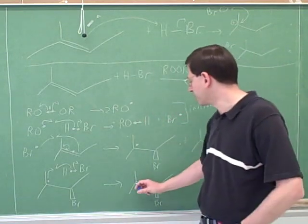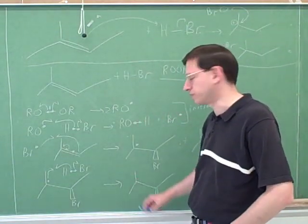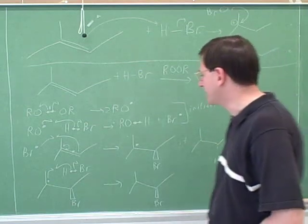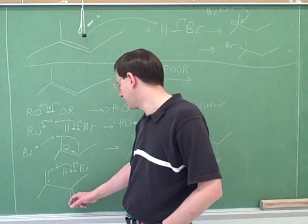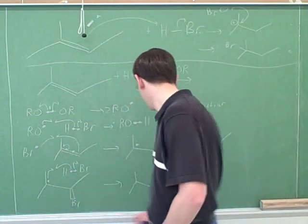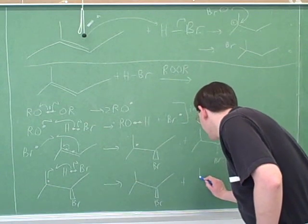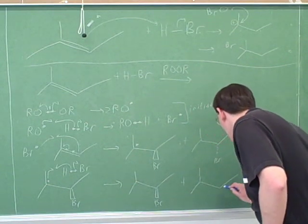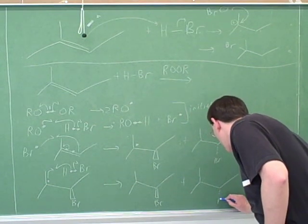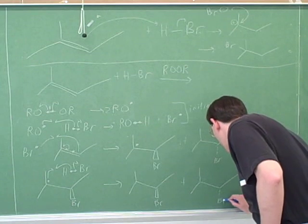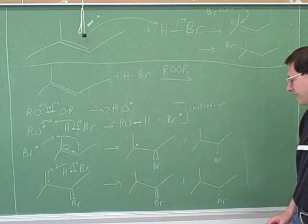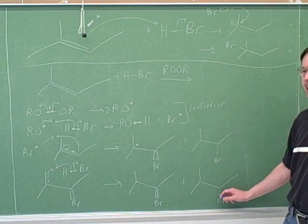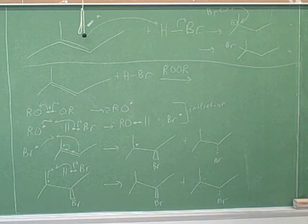But is this forming a new stereocenter? No, so we don't need to worry about stereochemistry here. I showed the hydrogen attacking the compound with the bromine on the wedge, but we would also get the enantiomer where the hydrogen attacks the compound with the bromine on the dash. So we get two different products.